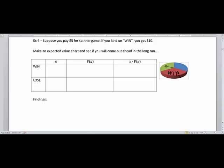We're going to start off with looking at a game where you pay $5 for a spinner game. Here's the spinner with three sections. If you land on the win, you get a $10 bill. And if it lands on the green or the blue, you lose your $5.